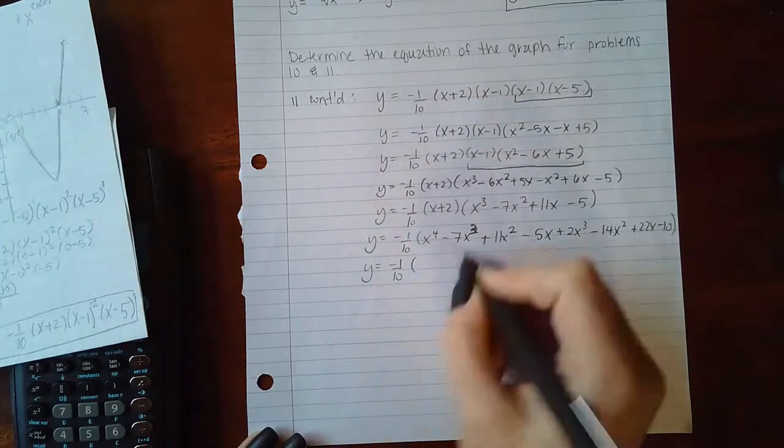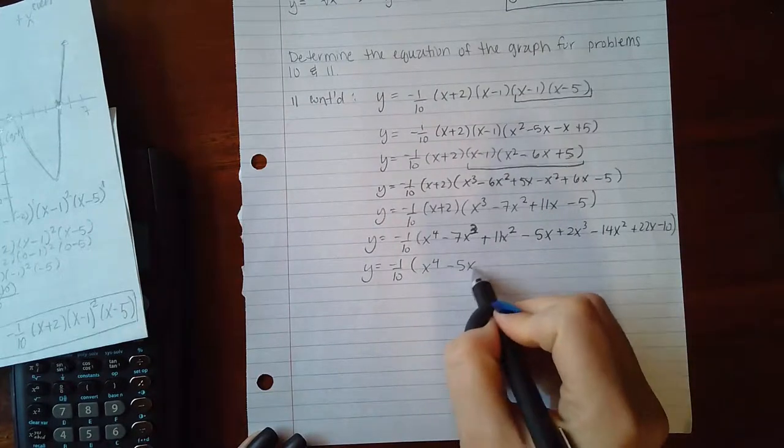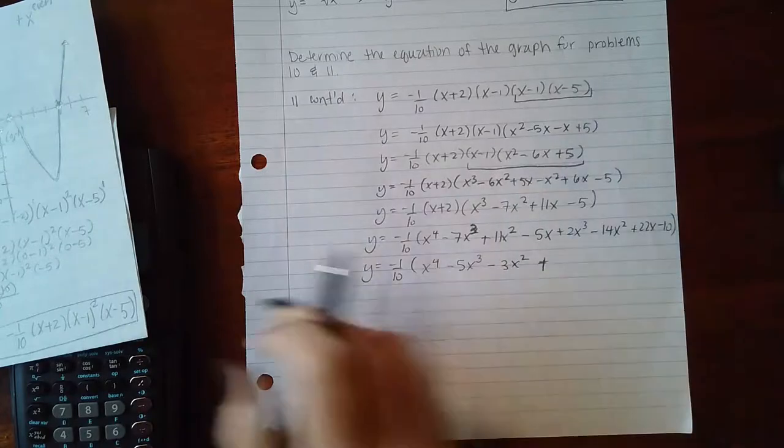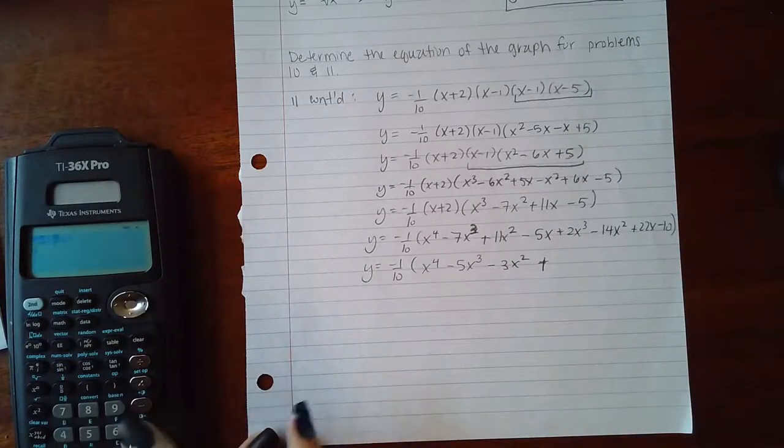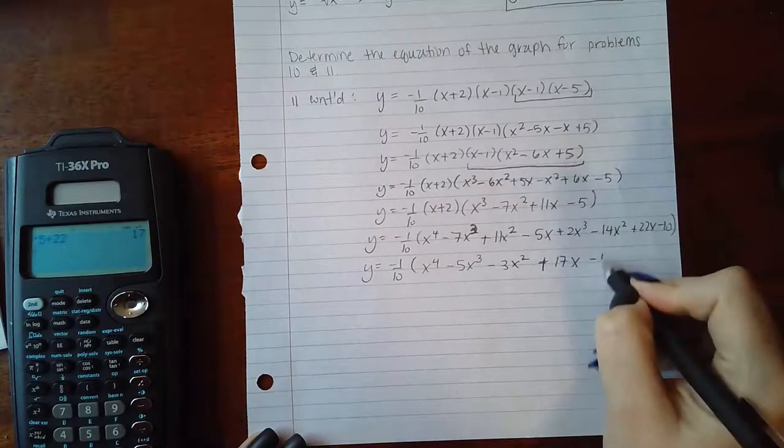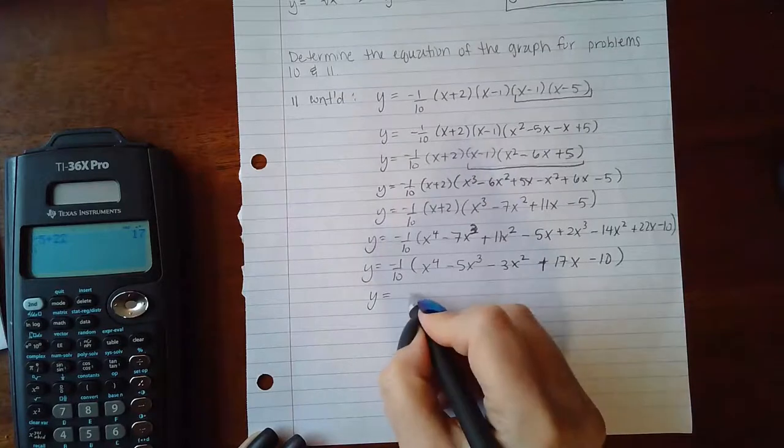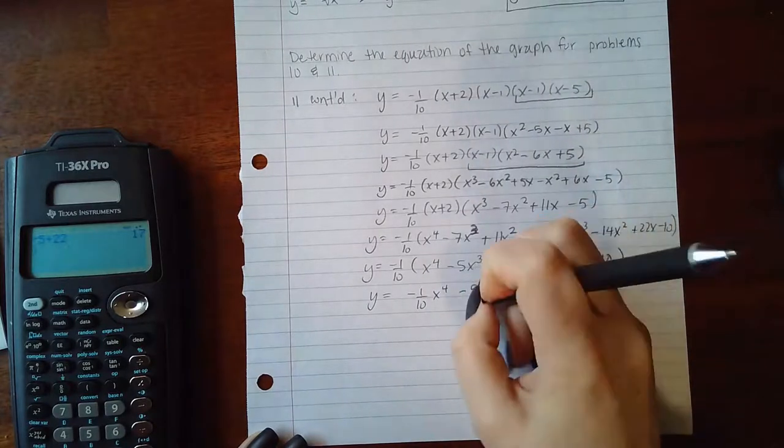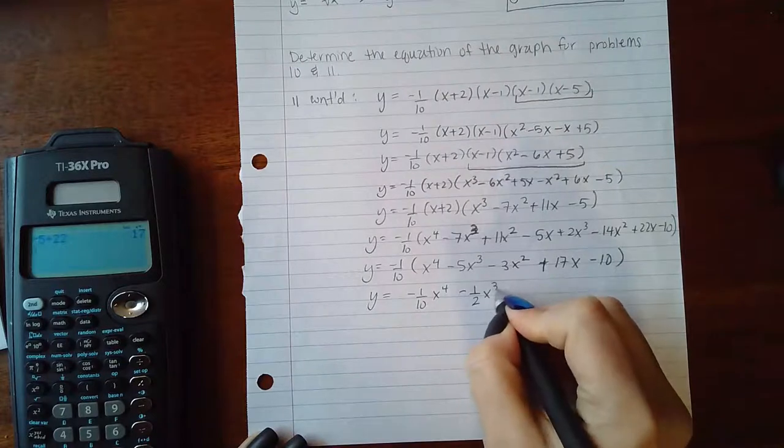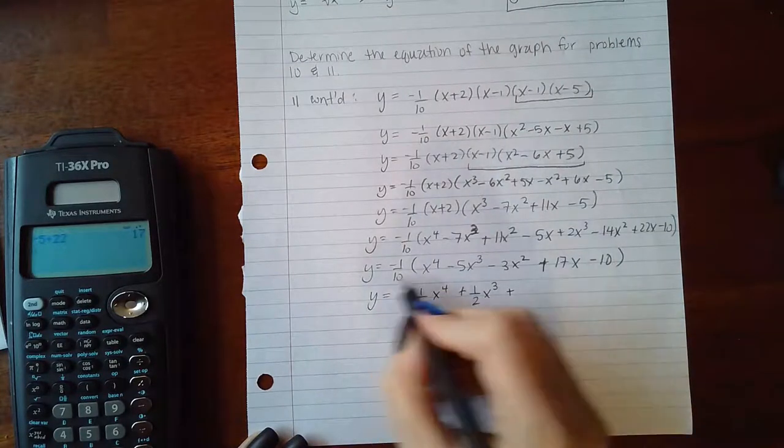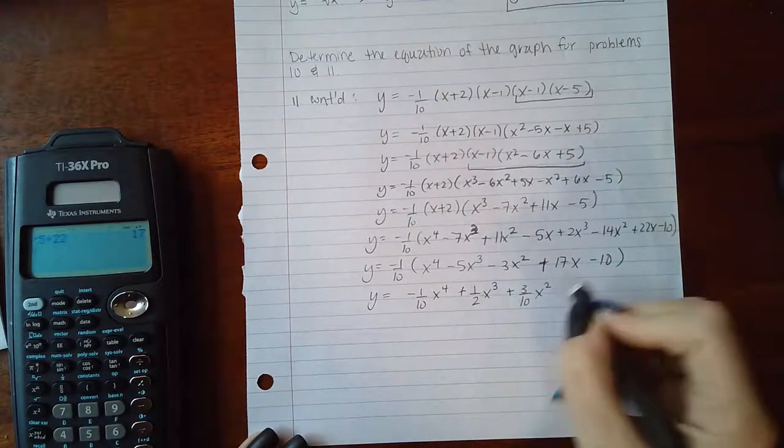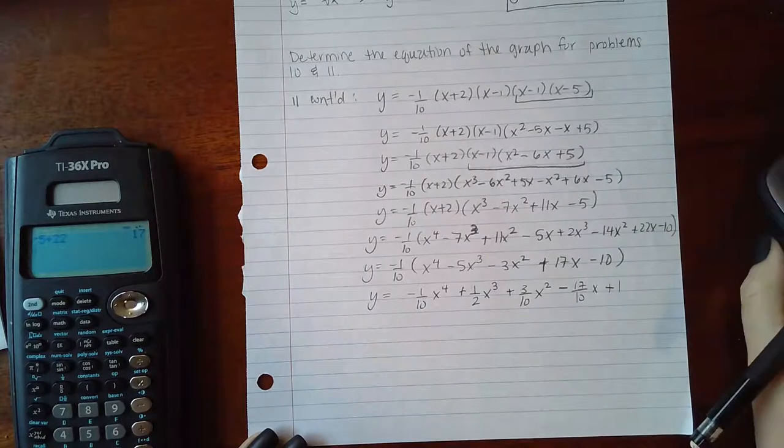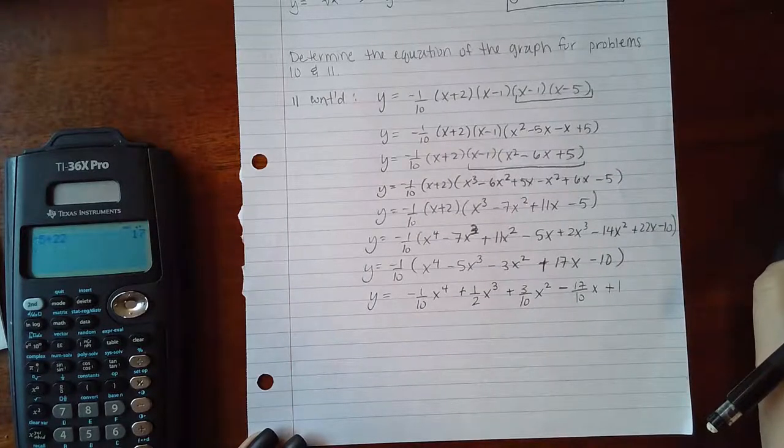I end up with x to the fourth minus 5x cubed minus 3x squared plus 17x minus 10. If I factor in the 1/10th, I get negative 1/10th x to the fourth, 1/10th x cubed, 3/10th x squared, negative 17/10th x, and then positive 1. You could also see the answer to this equation like this.